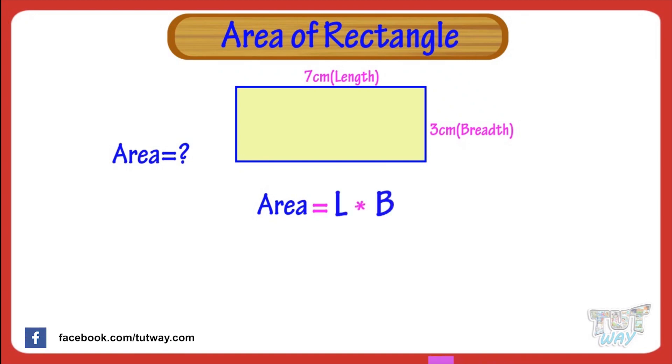So, putting the value we get, area equals 7 multiplied by 3. Area equals 21 cm square.